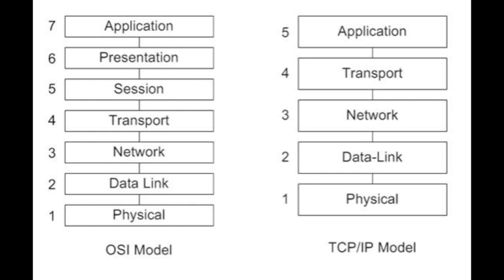Although the OSI model is undoubtedly the most popular model, it is often criticized for being too generalized, especially in the upper layers such as the application, presentation, and session layers, where it is often said that the boundaries are not thoroughly defined and not sharp enough. For this and other reasons, the OSI model is currently being phased out and replaced by the more simple five-layer internet model, especially in the United States.